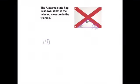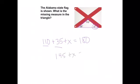Well, in order to solve it, you should have looked at it and said 110 plus 35 plus X gives me 180. So then I can combine 110 and 35, and I get 145 degrees plus X is 180. So I'm going to subtract 145 from both sides, and I get X equals 35.